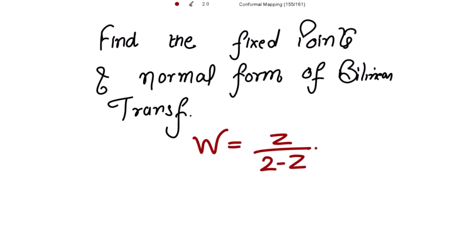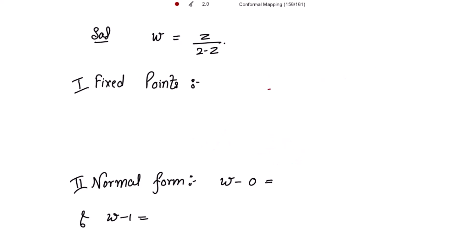We need to find the fixed points and normal form of the bilinear transformation w = z/(2 - z). So here we have to first find the fixed points and then find the required normal form. The given transformation is w = z/(2 - z), and to find the fixed points we always put w equal to z. So let's put w = z in the given transformation.